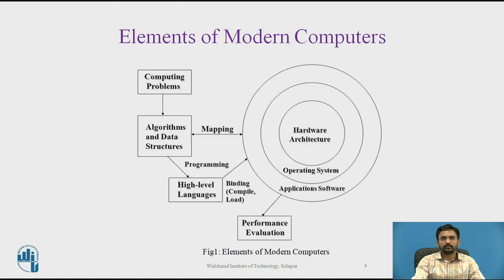Computers are general purpose machines designed to follow instructions to complete data processing tasks, although the specific architecture of different types of computers may vary. All computers accomplish data processing using different basic elements, and there are five basic elements of the computer system.